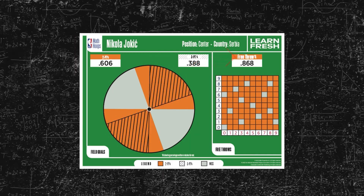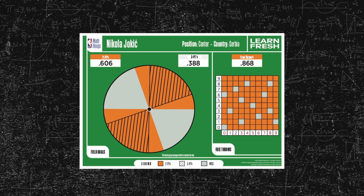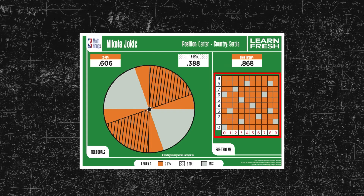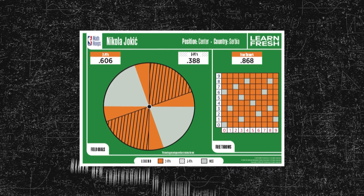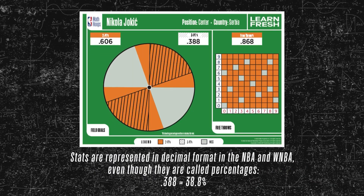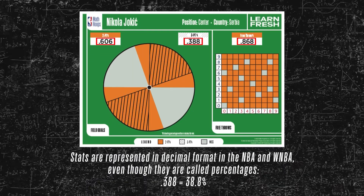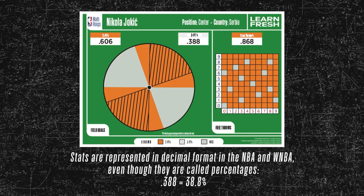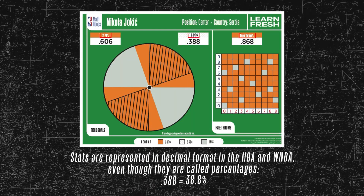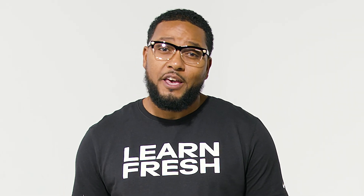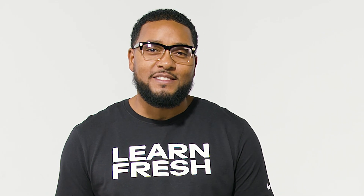On the right side of the card you will see a free throw percentage and a grid that represents the free throw percentage of that player. It's also important to know that all of these stats are represented in decimal format — that's how the NBA and WNBA presents statistics, even though they are called percentages. Students will want to draft the players with the best statistics to help them have a great season.